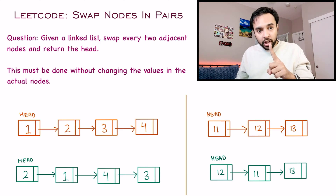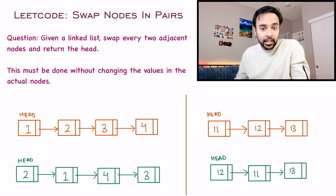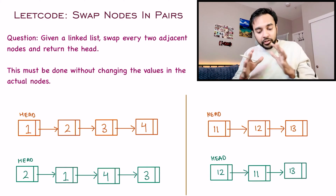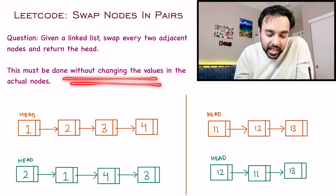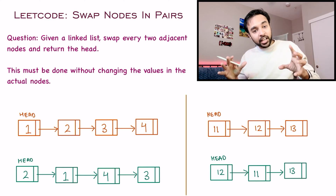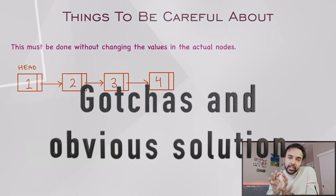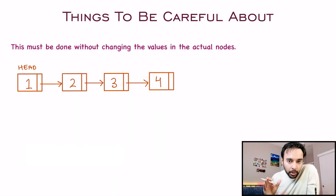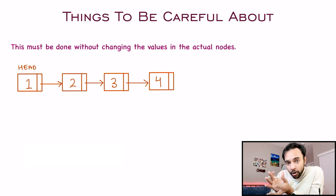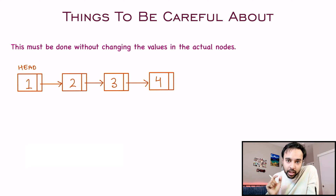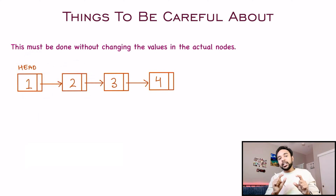If your list has only one node, then you cannot perform any swapping, and that will be the returned answer. The problem also states that all operations must be done without changing the values in the actual nodes. That means the actual nodes should get swapped — not the values inside them.